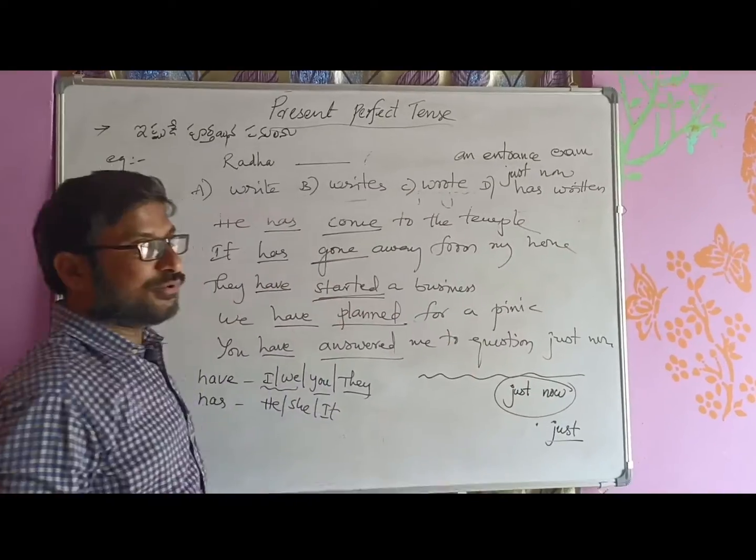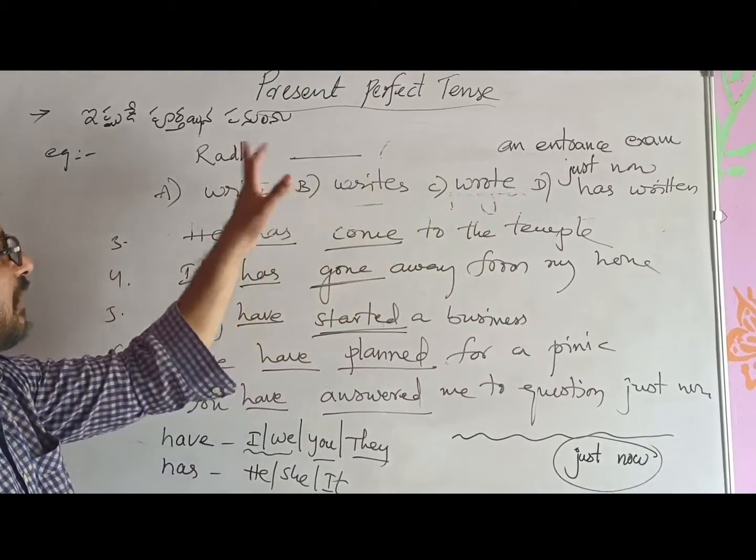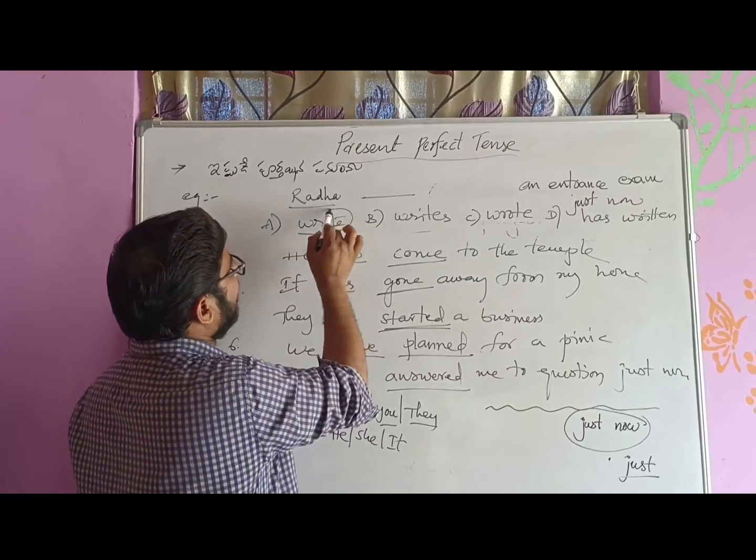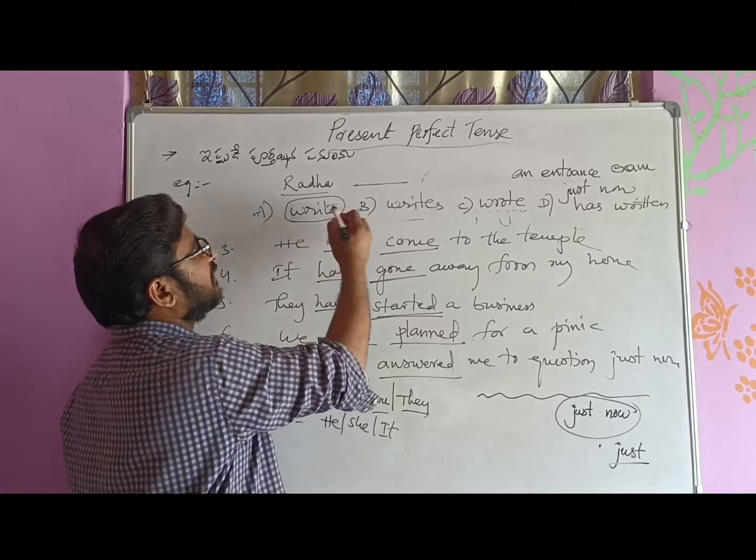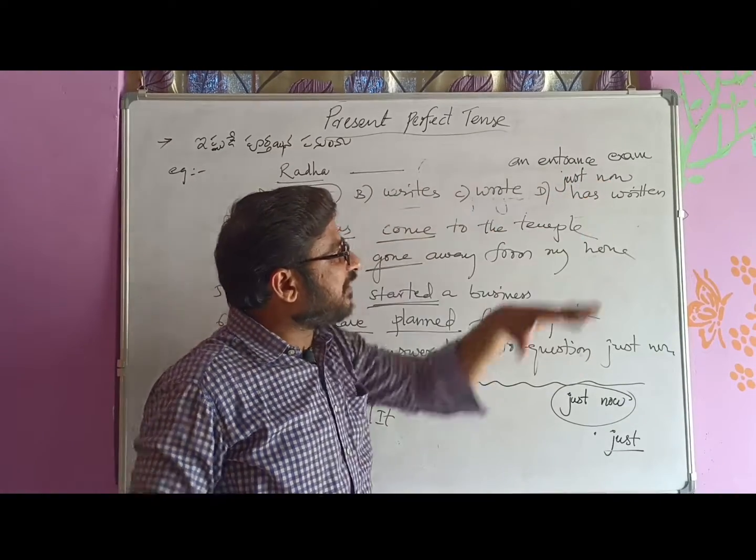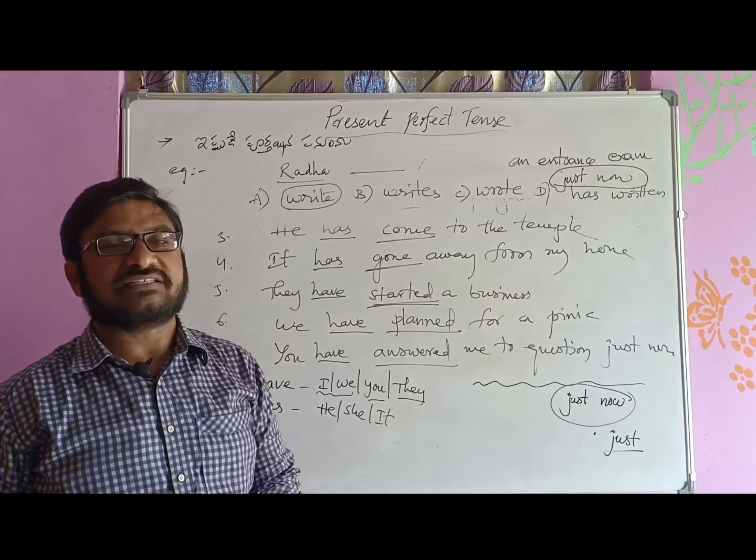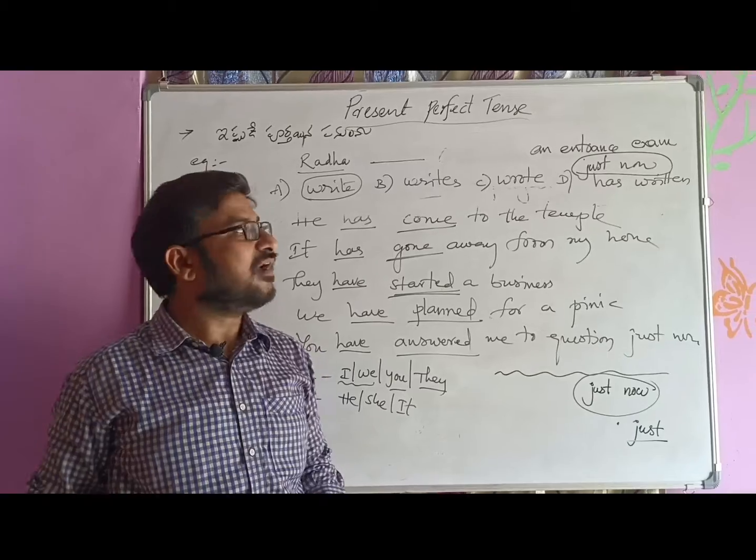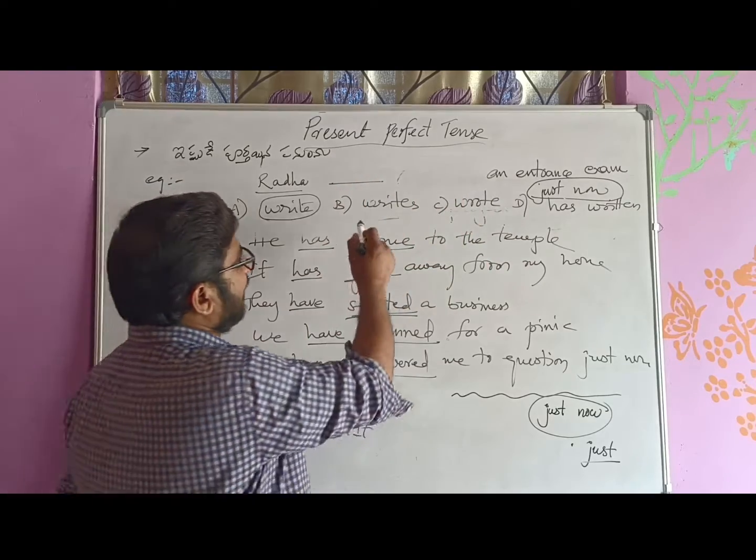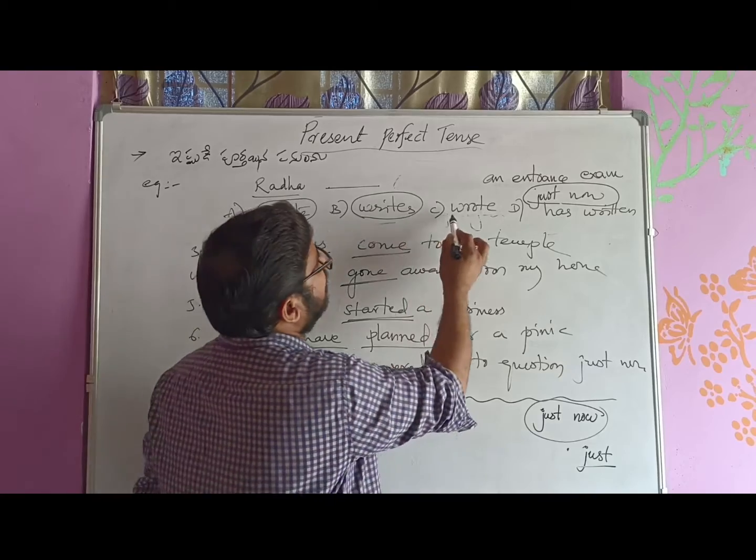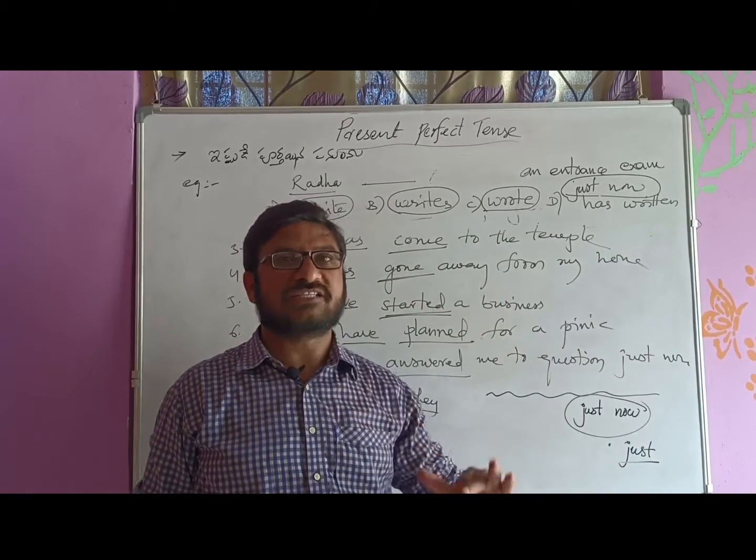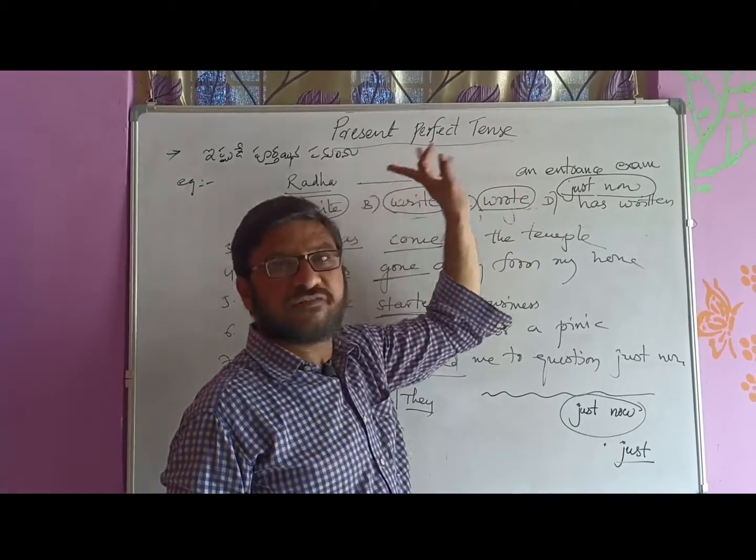When four options are given, Radha write an entrance exam - first we need to identify which tense this is. Radha is third person singular number, so which tense should we use? If it is simple present, it would be 'writes', so that is not the answer. We can identify it is not simple present because of the clue word. Simple present would have clue words like everyday, every hour, every month, every week, every year. Option C is 'wrote', which is used with past time references like yesterday, last year, last month, last decade. But our clue word is 'just now', which indicates Present Perfect.